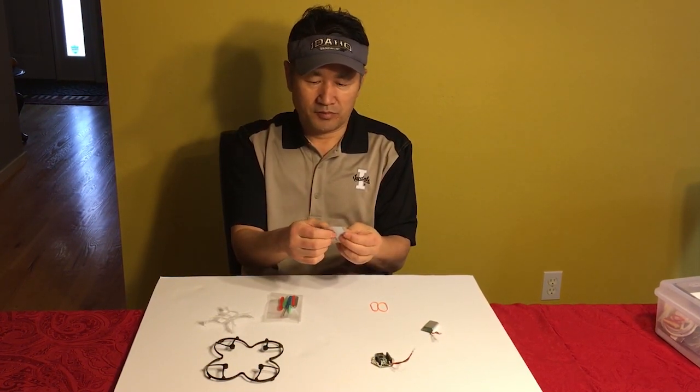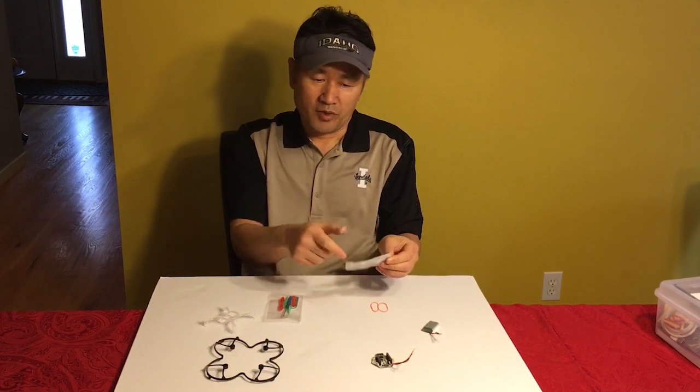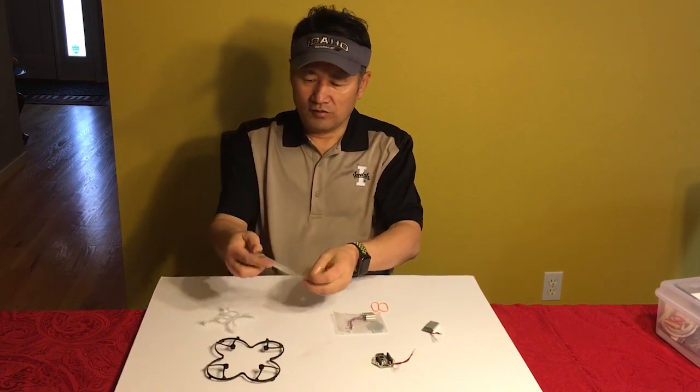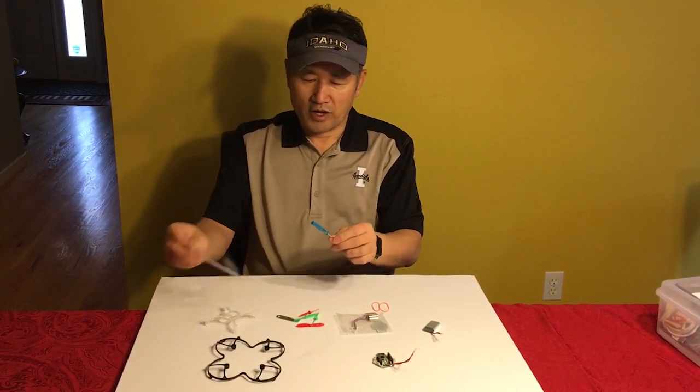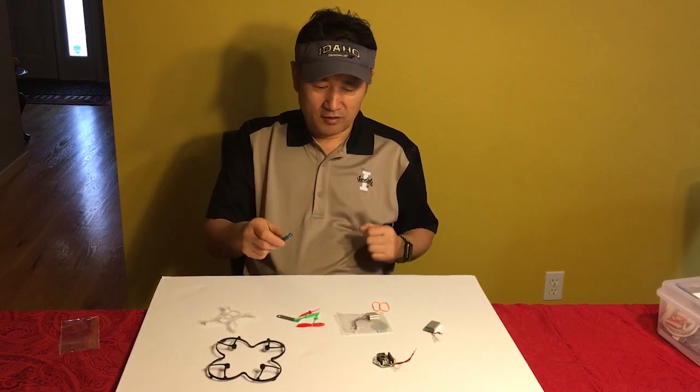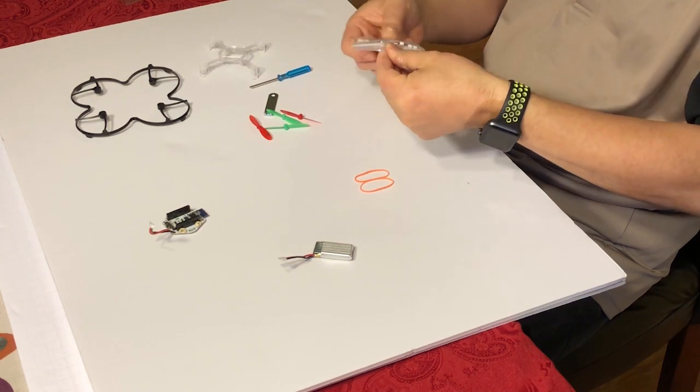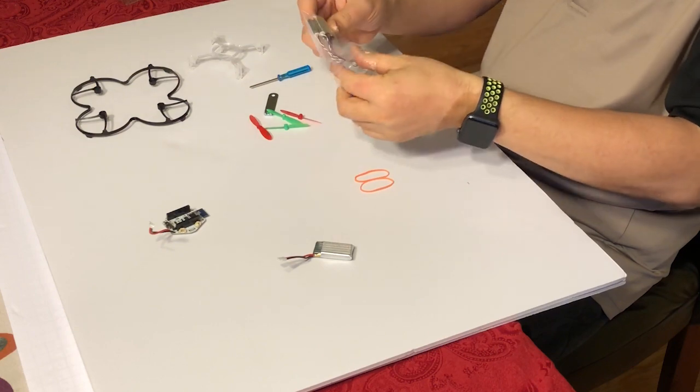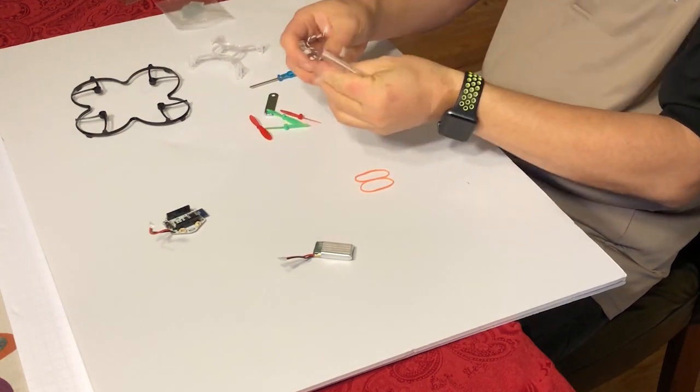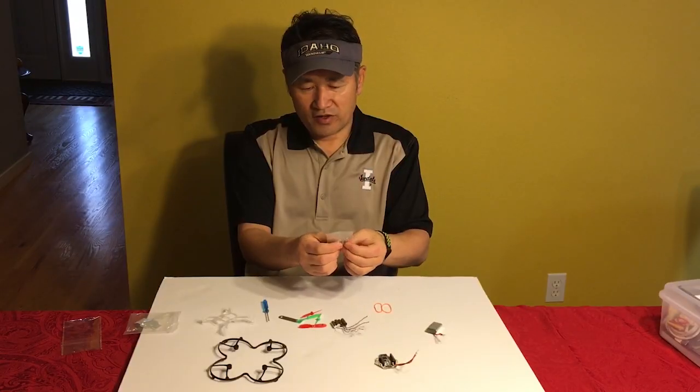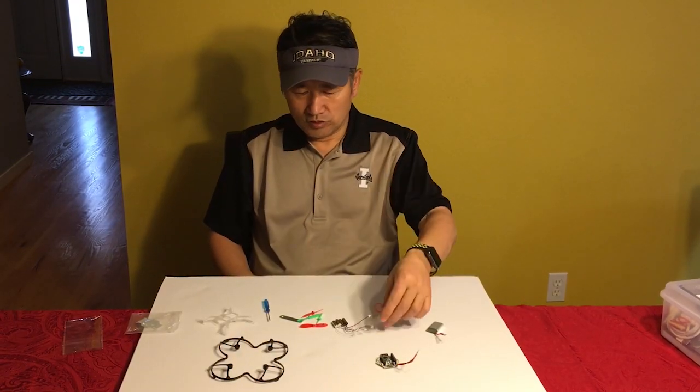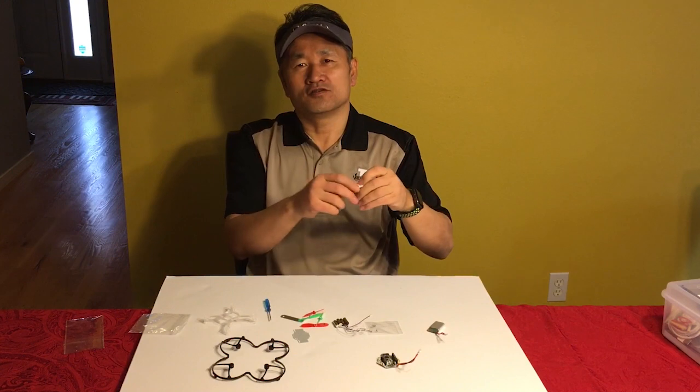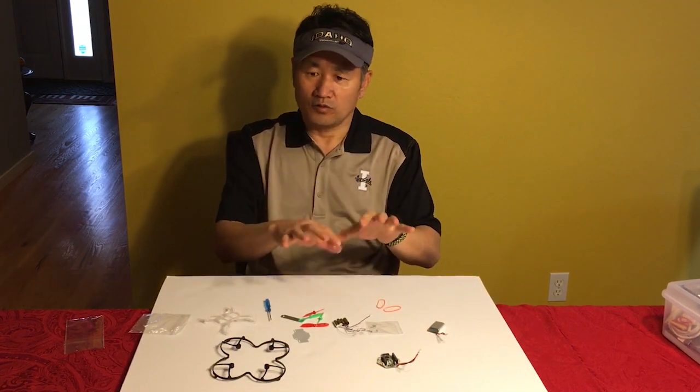We're gonna put this circuit board on the top and also we have some motors in here. Additionally we have small pieces of plate. We're gonna utilize this one to make a battery compartment. And we have propellers inside, and also a screwdriver. We're gonna use this to tighten the screws to secure this whole system into the body frame.